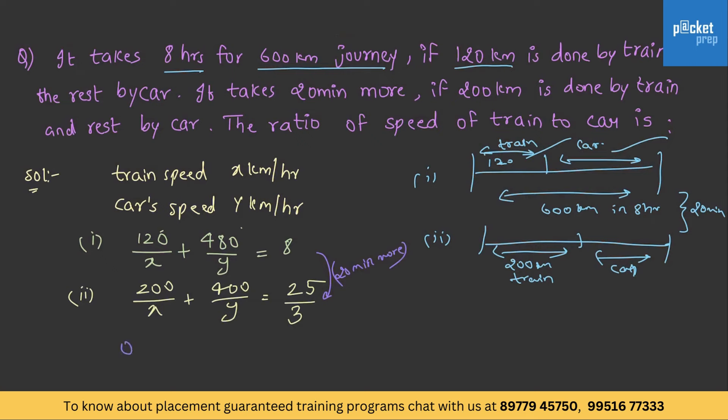On solving these two equations, we get x value as 60 and y value as 80. Therefore, the ratio of the speeds of train and car is 60 is to 80.